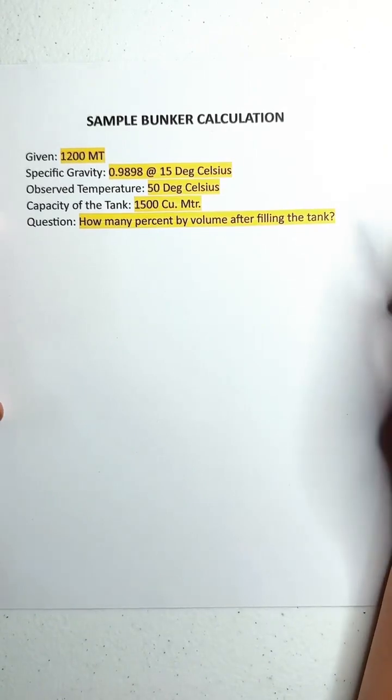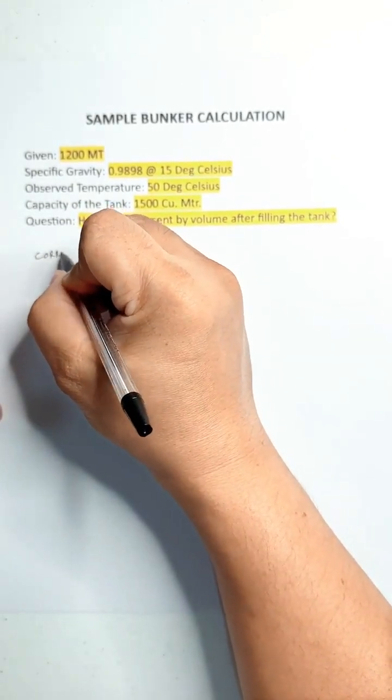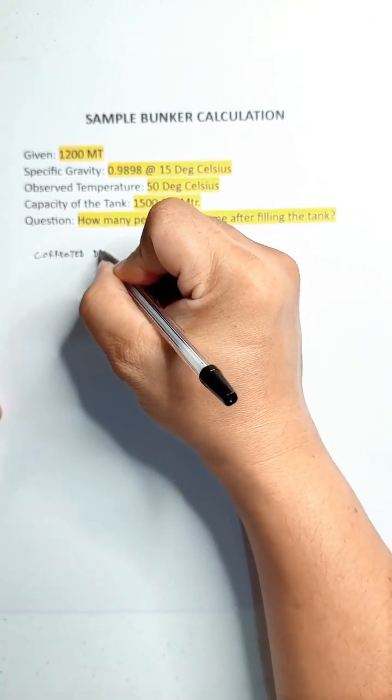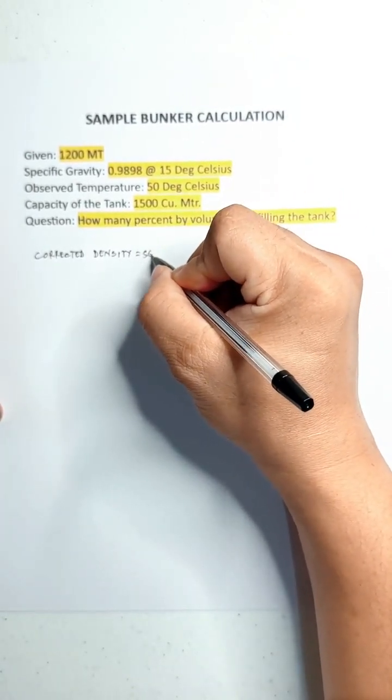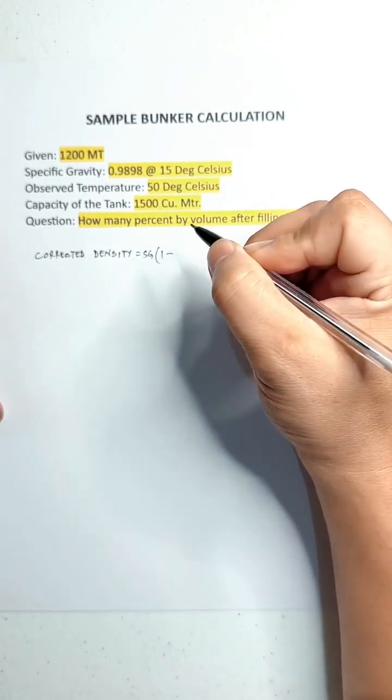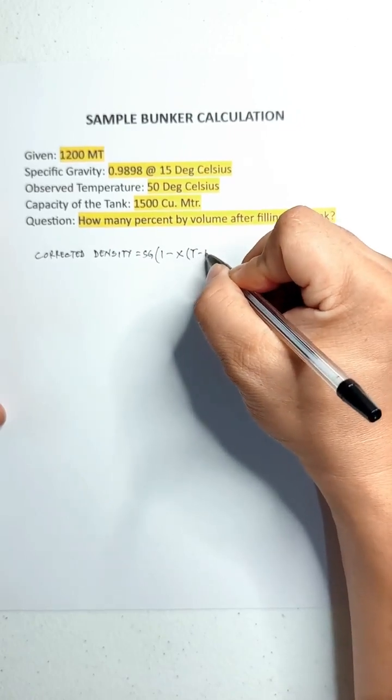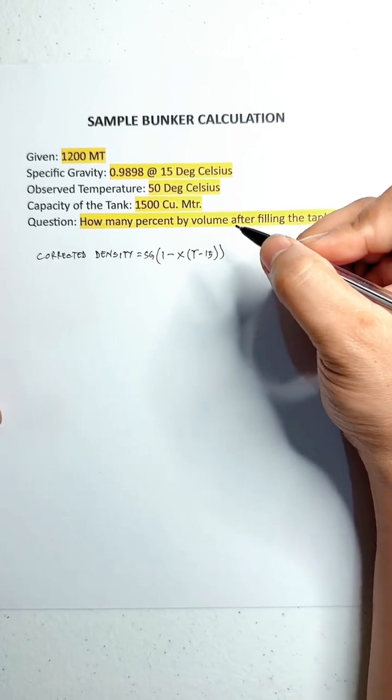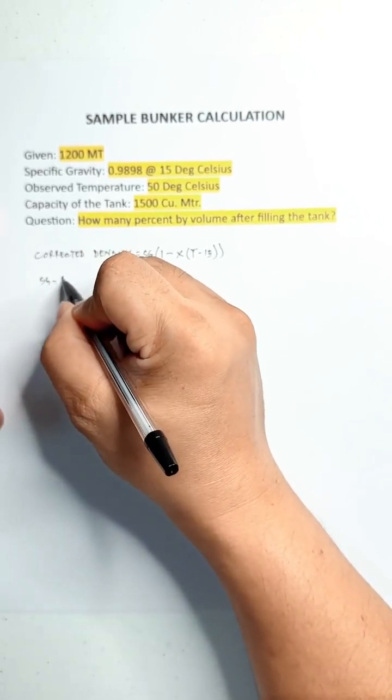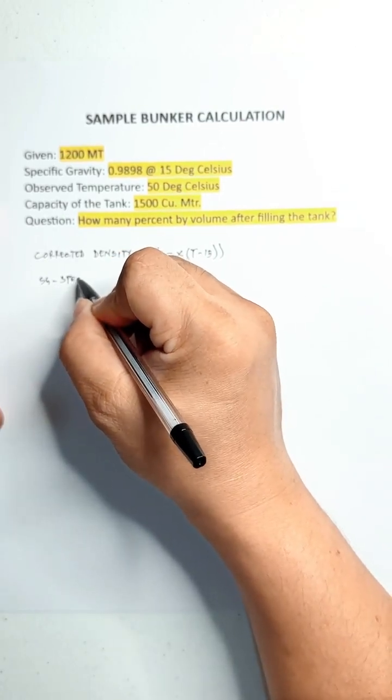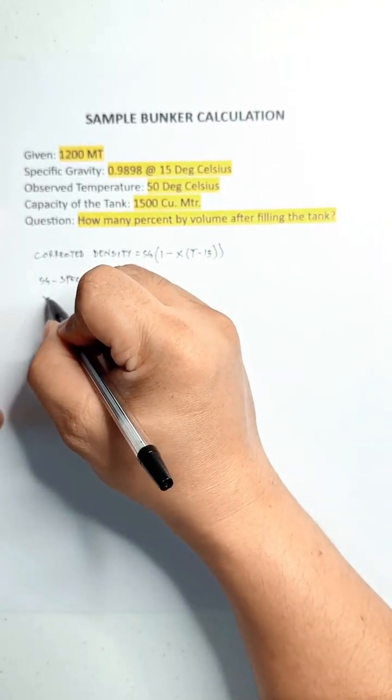The formula for getting the corrected density is: corrected density equals specific gravity times 1 minus x times the change of temperature minus 15. Where SG means specific gravity, and x is the correction factor.